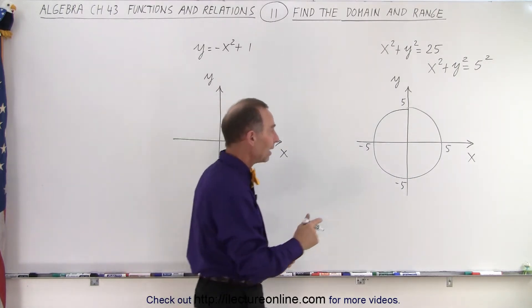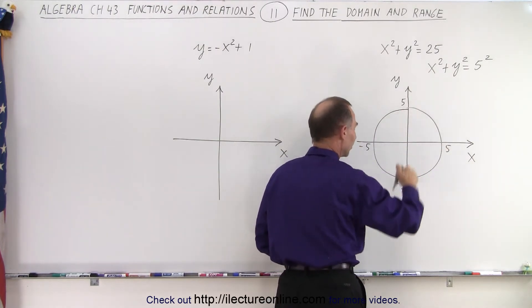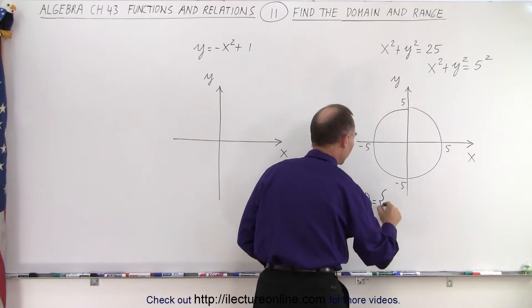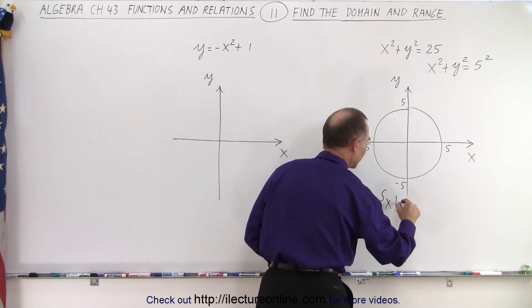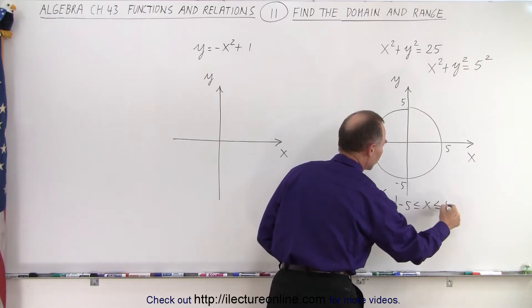We can see that the x values are bounded by plus and minus 5 and so are the y values. That means that the domain is equal to all the values x, such that negative 5 is less than or equal to x which is less than or equal to positive 5.